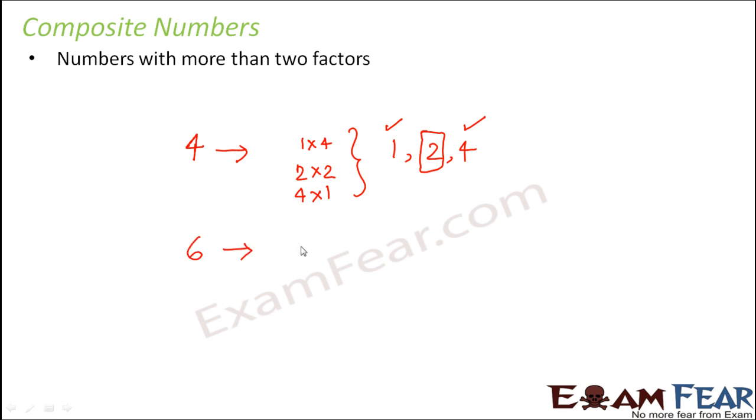Think of 6. So 6 can be written as 1 into 6, 2 into 3, 3 into 2, 6 into 1. So basically it has 1, 2, 3, 6 as the factors. So you see other than 1 and itself, it has two more factors that is 2 and 3.